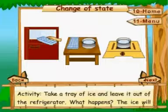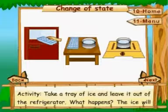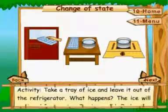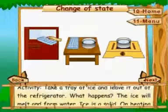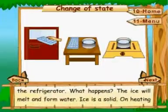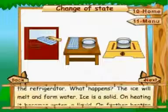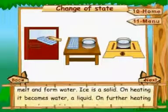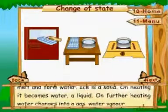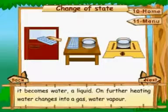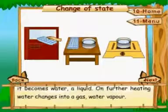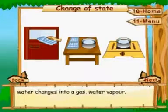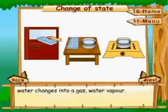Change of state. Activity: Take a tray of ice and leave it out of the refrigerator. What happens? The ice will melt and form water. Ice is a solid. On heating, it becomes water, a liquid. On further heating, water changes into a gas — water vapor.